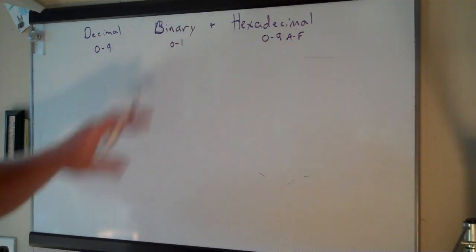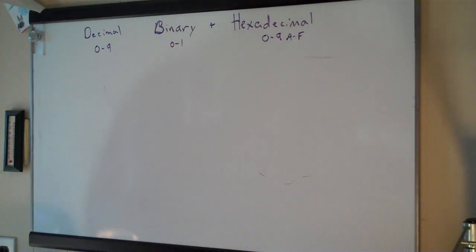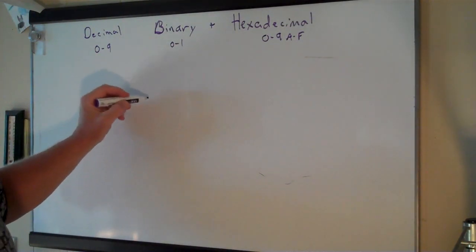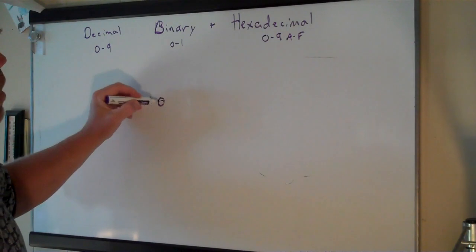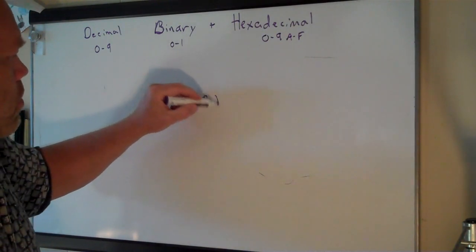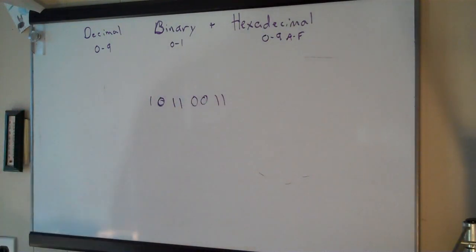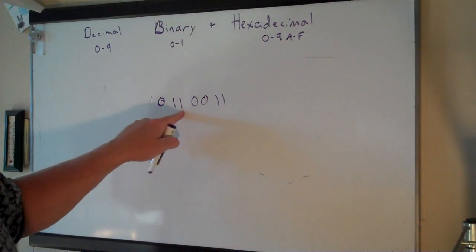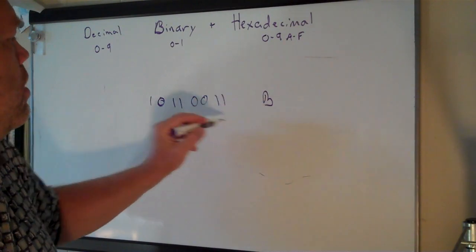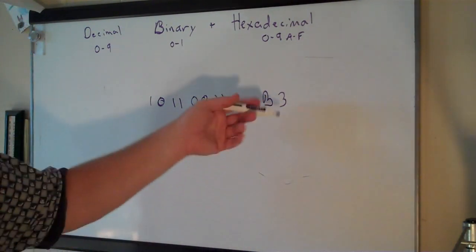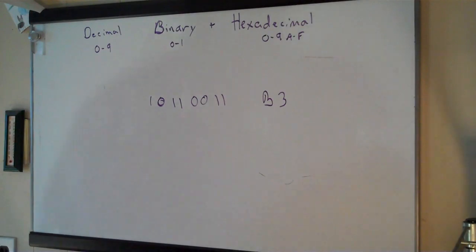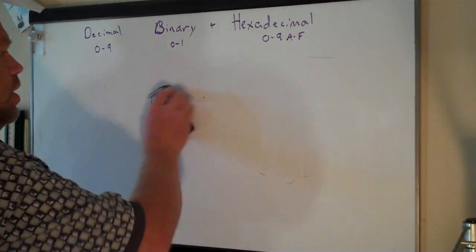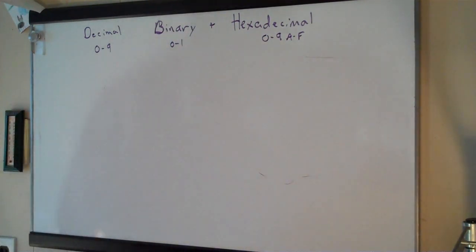Hexadecimal is really just another way to show numbers that's easier than binary. If you take a binary number like 10110011, you don't want to have to look at numbers like that all day and try to figure out what they are. So if you take something like this, it would be B3. B3 is actually easier to work with than something like that binary string.